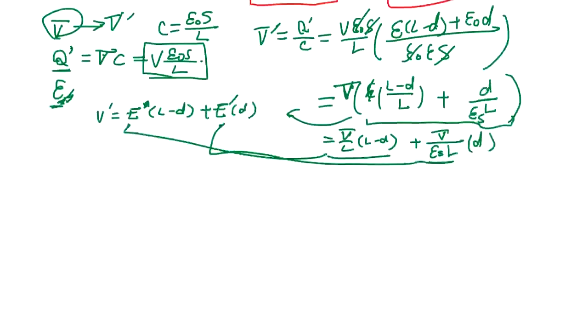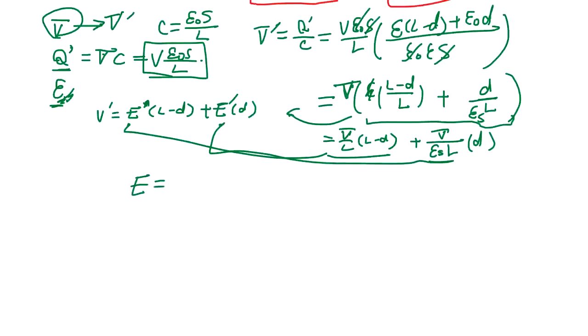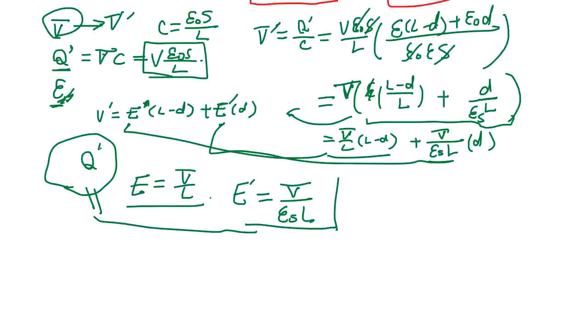E is going to be E is going to be V over L, which is original, electrical engineering, electrical field created by Q dash, right? Okay? And E prime is going to be V over L. So, this is simple because Q is maintained the same when you insert, the electric material. So, it's going to be simply the difference on the relative permittivity and the distance.